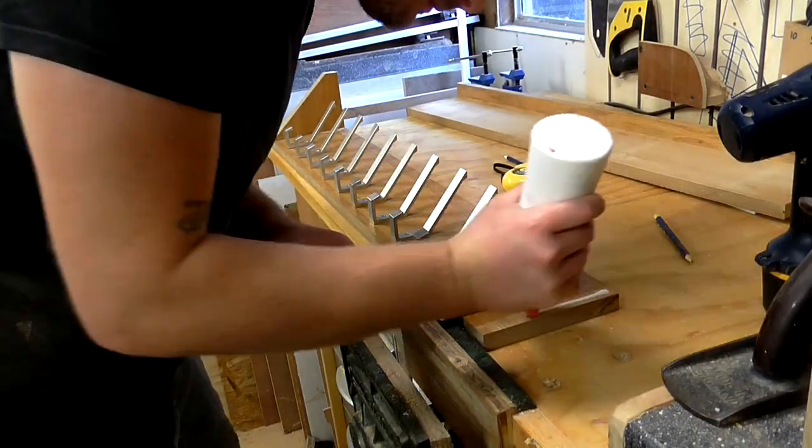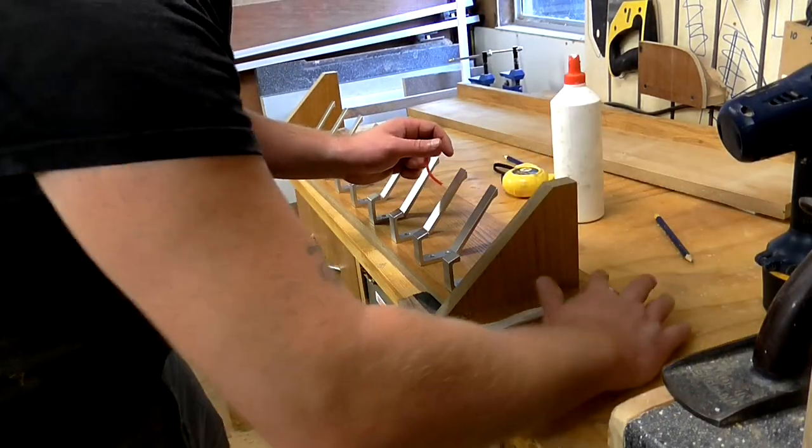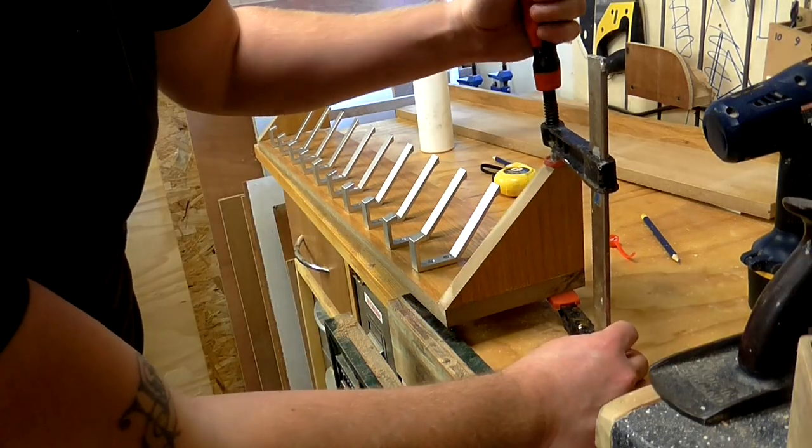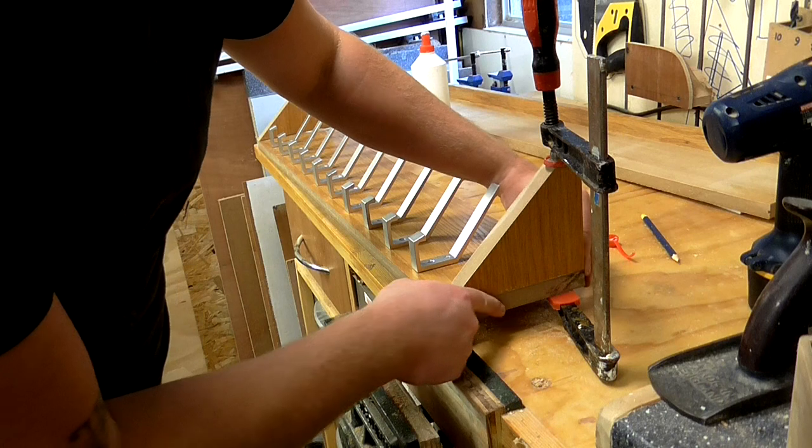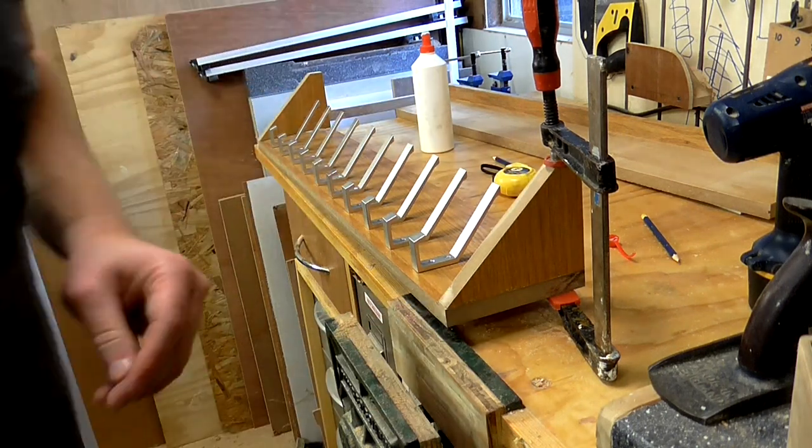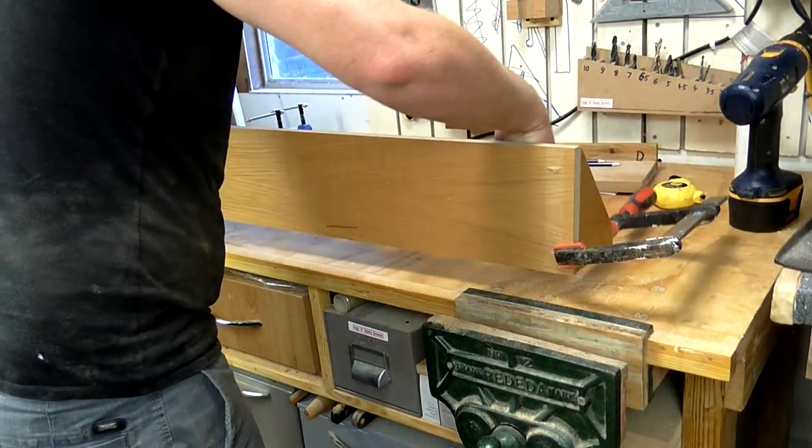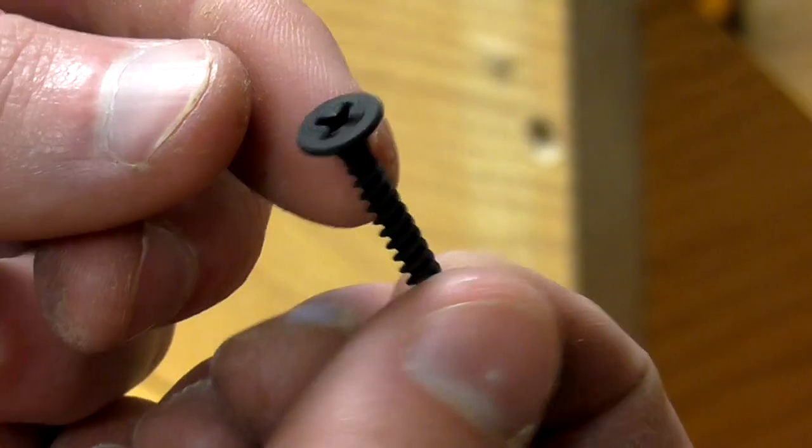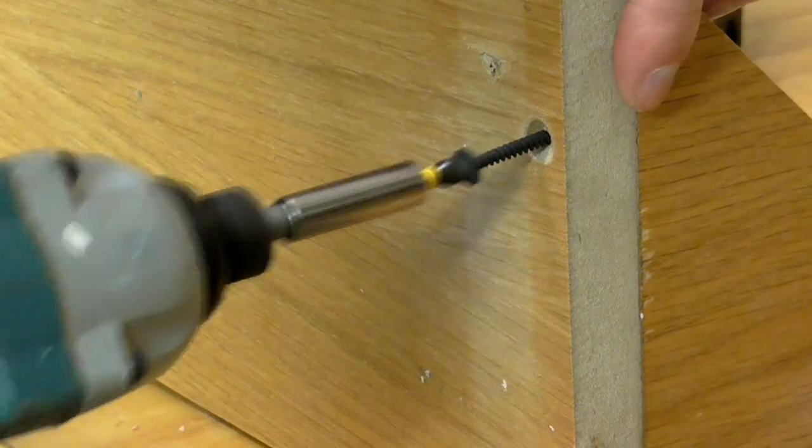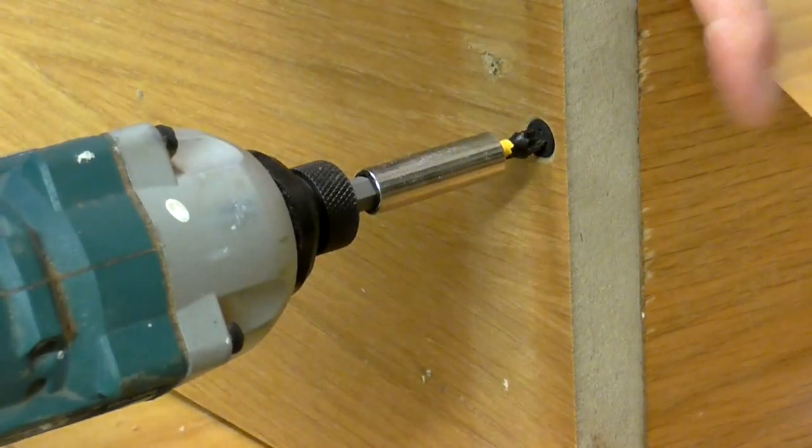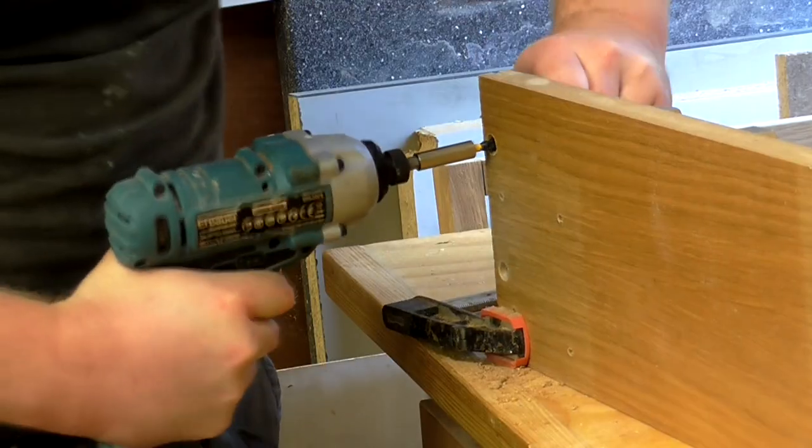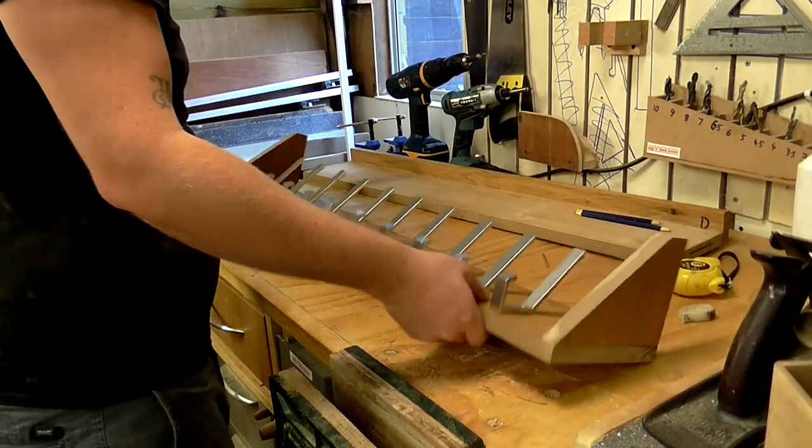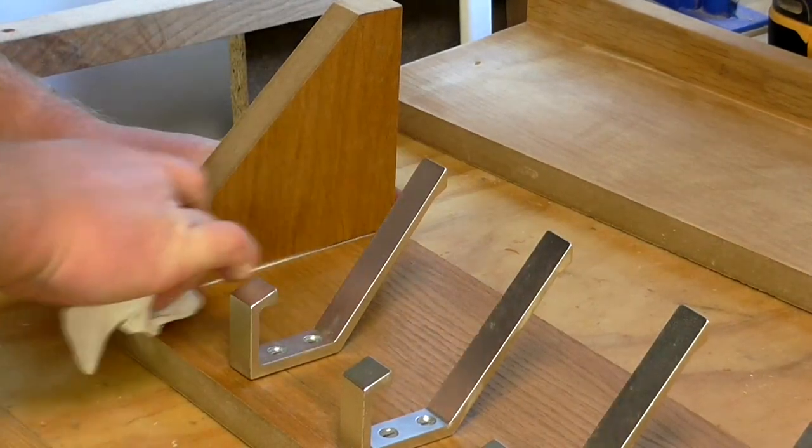So now I'm going to glue on these corner brackets. I'm just going to get a clamp on each end, make sure that the sides are flush, and then I can add some screws. I'm using drywall screws for this. I wiped off the excess glue with a damp cloth.